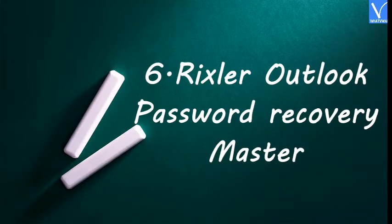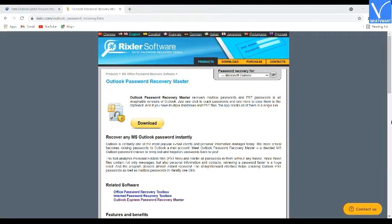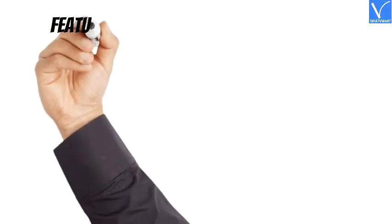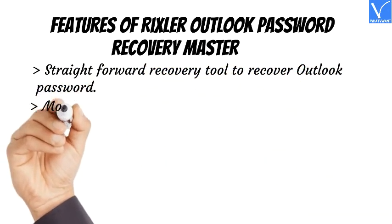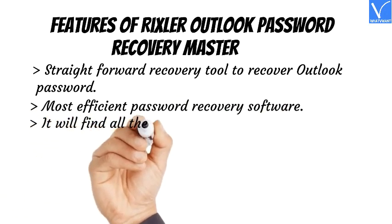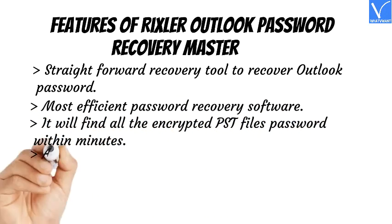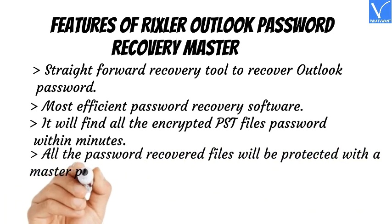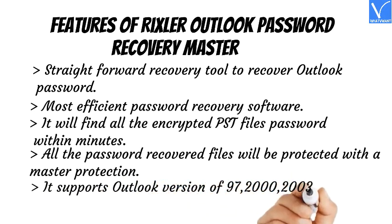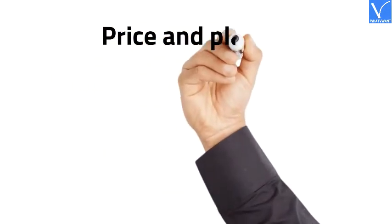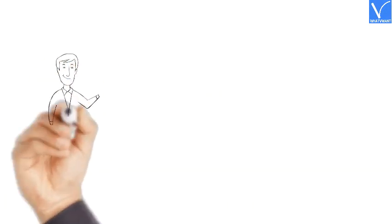Number 6: Rixler Outlook Password Recovery Master. Rixler Outlook Password Recovery Master will recover the Outlook passwords and mailbox passwords in all versions of Outlook. It supports Windows NT, 2000, XP, 2003, Vista, 7, and 8. Features: Straightforward recovery tool for Outlook passwords. Most efficient password recovery software. Finds all encrypted PST file passwords within minutes. All recovered password files will be protected with a master protection. Supports Outlook versions 97, 2000, 2003, 2007, 2010, and 2013. The price and plans of Rixler are exhibiting on the screen. The product link is provided in the description.